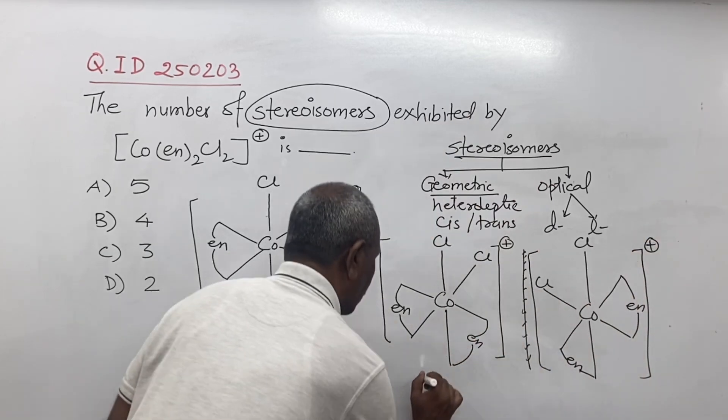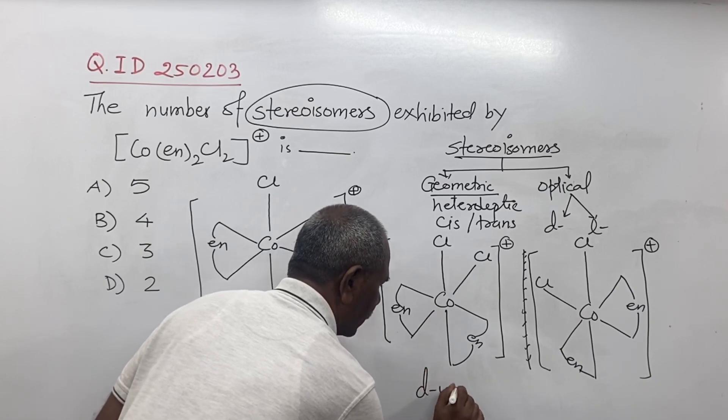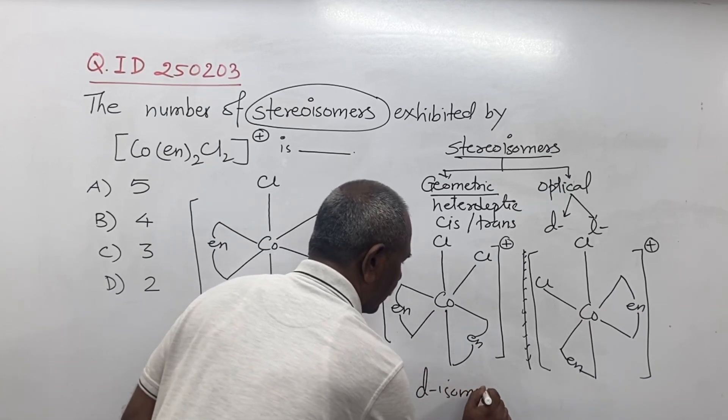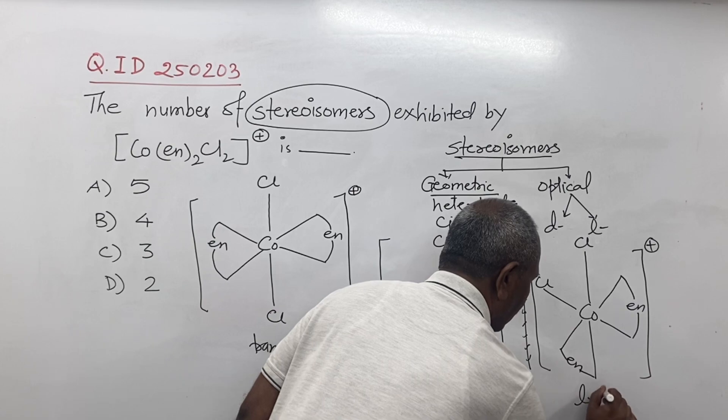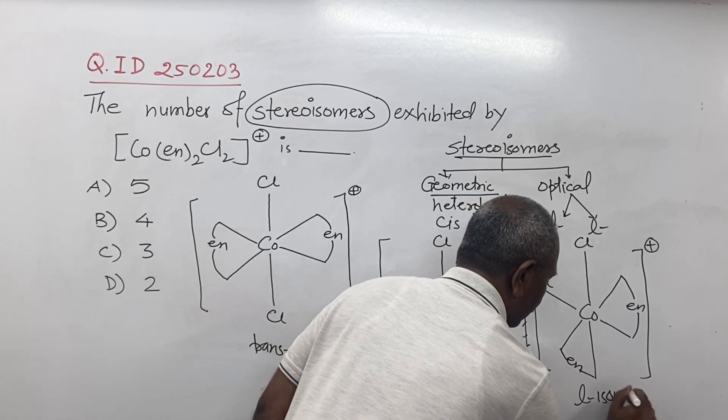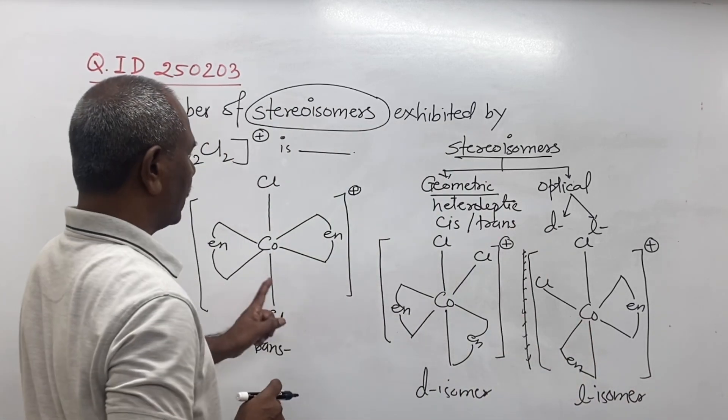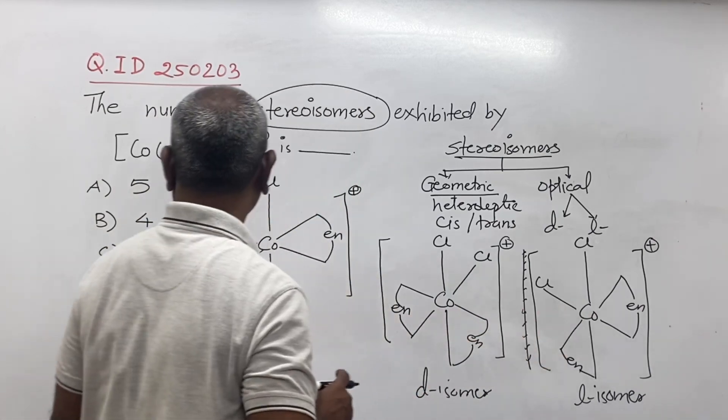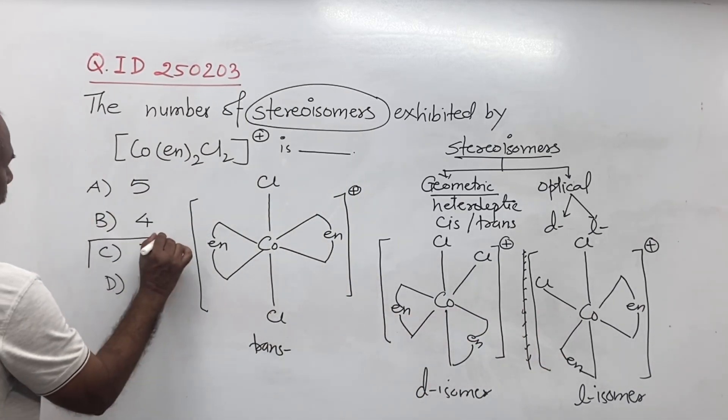So this is the D isomer and this is the L isomer. So total is one, two, three. So the correct answer is C, that is three.